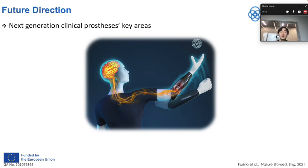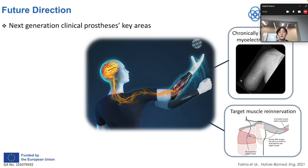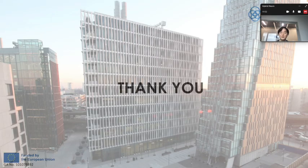Those are the overviews of the current state-of-the-art interfacing and control methods for assistive devices. What we think are the key areas for next-generation clinical prostheses are: incorporating TMR surgery to access missing limbs' neural signals; using chronically implantable myoelectric sensors to overcome issues of surface EMG; and using advanced control algorithms, such as blind source separation, to obtain neural codes for reliable neural information. Thank you for listening.